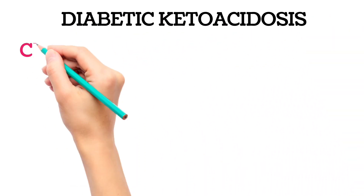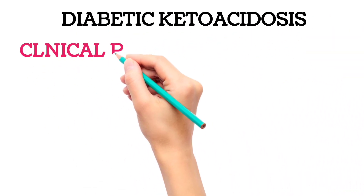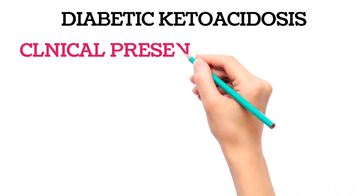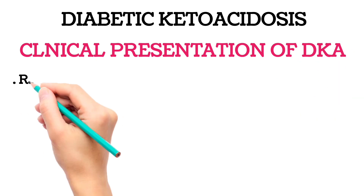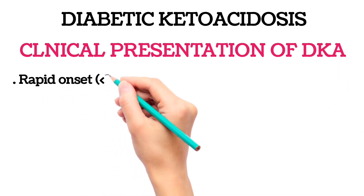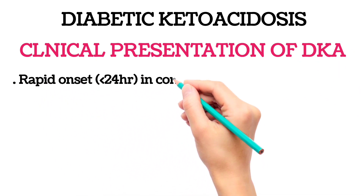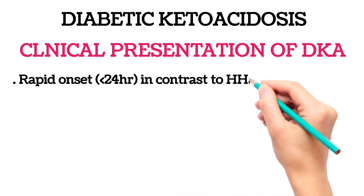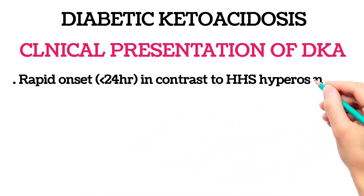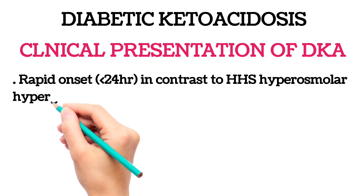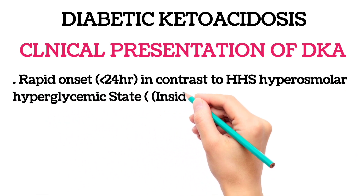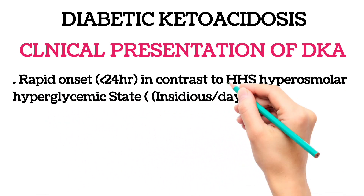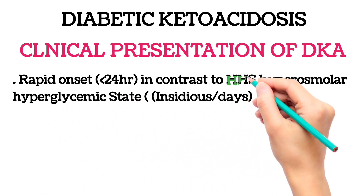Diabetic Ketoacidosis: Clinical Presentation of DKA. Rapid onset, less than 24 hours, in contrast to HHS — hyperosmolar hyperglycemic state — which presents insidiously over days.